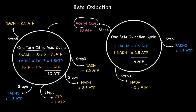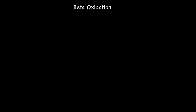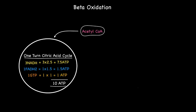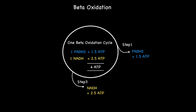So in summary, acetyl-CoA produced from the beta-oxidation of fatty acids is equivalent to 10 ATP when entering into the citric acid cycle, while the reduced coenzymes FADH2 and NADH generated at steps one and three from each beta-oxidation cycle contribute a total of four ATPs.